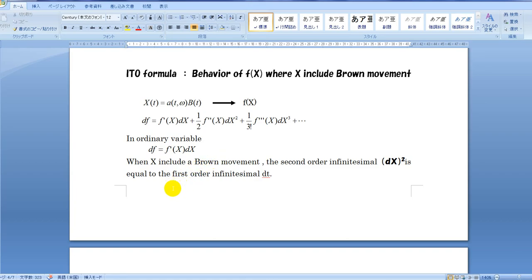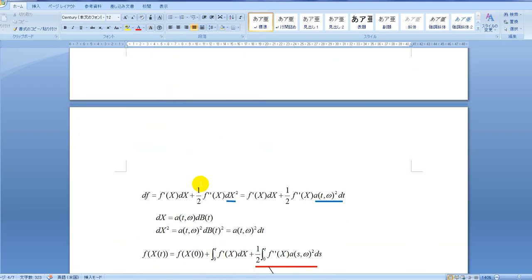But when the variable X includes a Brown movement, the infinitesimal of the second power of dX turns into dt. This is because of the property of random change of dB(t). Consequently, the expansion of the small change df is expressed as follows.